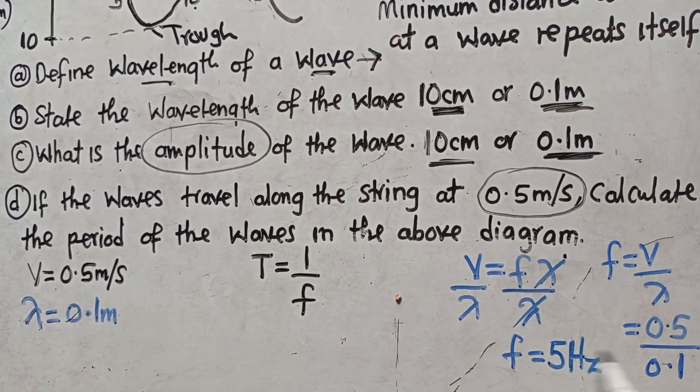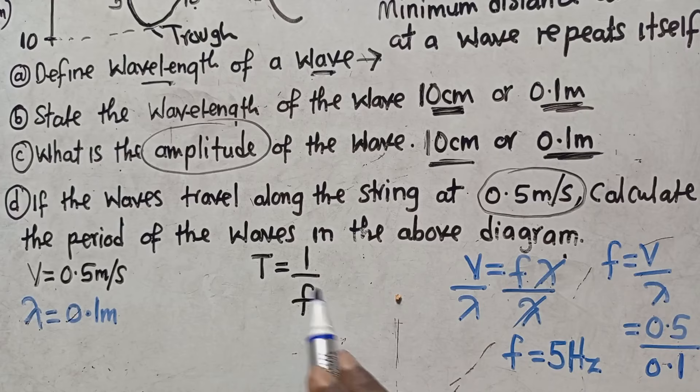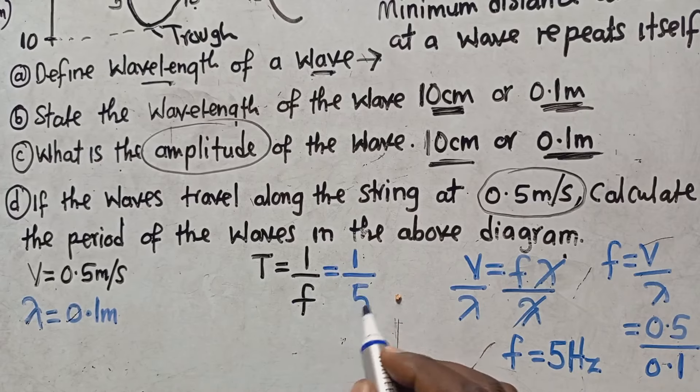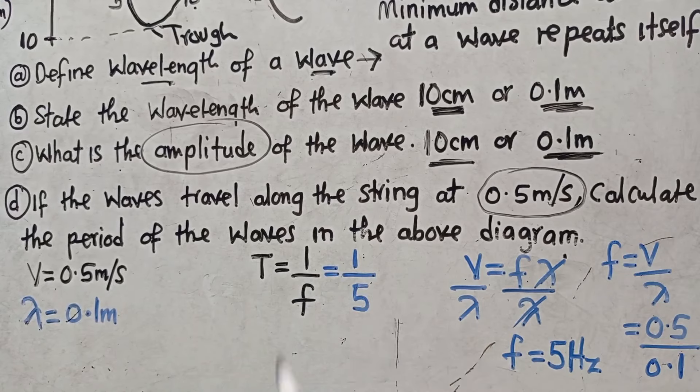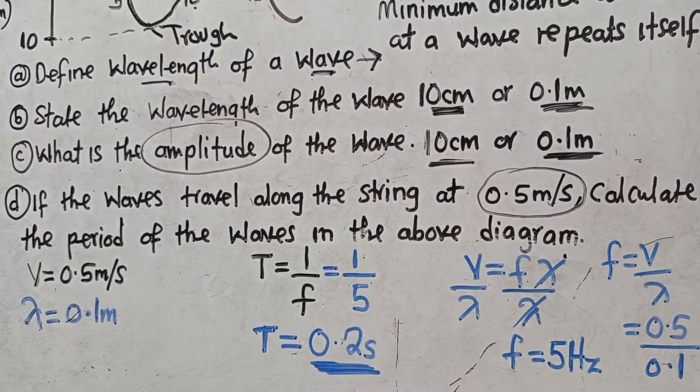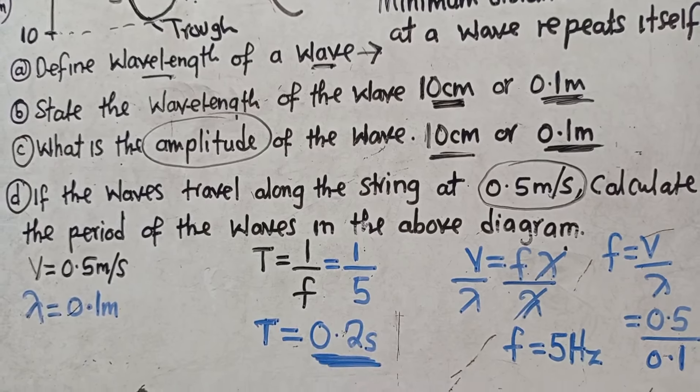5 hertz. It is this 5 that I am going to substitute there. So this is the same as 1 divide 5. Have you seen? 1 divide 5. So it means period is now equal to, period is equal to 1 divide 5. What is the answer? 0.2, 0.2 seconds. Period is in seconds. So this is the answer, you are done. This is what you are supposed to do.